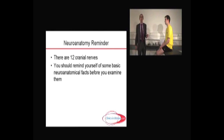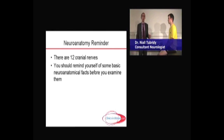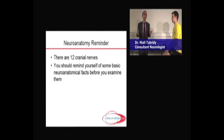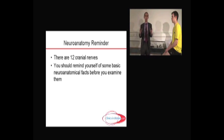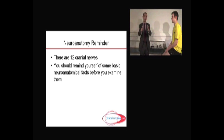We're now going to do the cranial nerve examination. There are 12 cranial nerves. One has to go back to a bit of basic neuroanatomy before you approach the cranial nerves with any sort of methodology. The first and second cranial nerves — the olfactory and the optic nerve — are slightly different in that their anatomy is different to the rest of them.